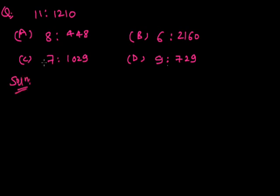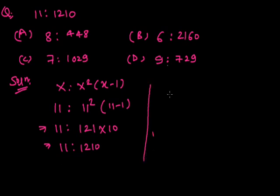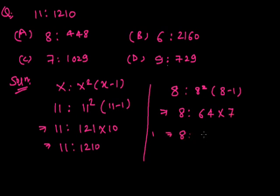Here we see the solution. The relation is x, x², x−1. Here x is 11: x² = 11² = 121, and x−1 = 11−1 = 10. So we have 11, 121, 10. The same relationship holds in option A: x = 8, 8² = 64, 8−1 = 7. So option A gives 8, 64, 7 — that is 4, 4, 8 as presented. Answer is option A.